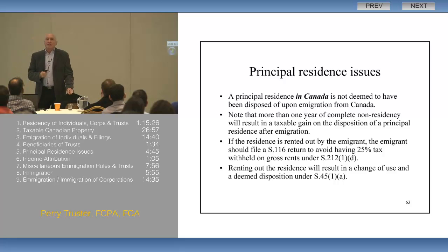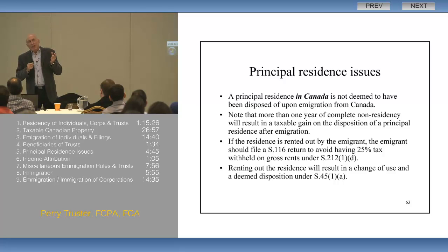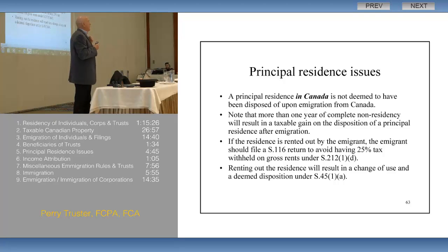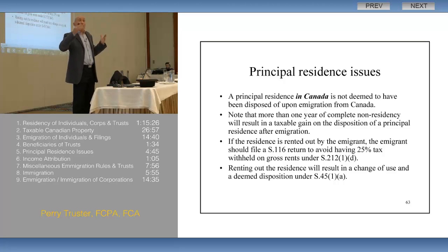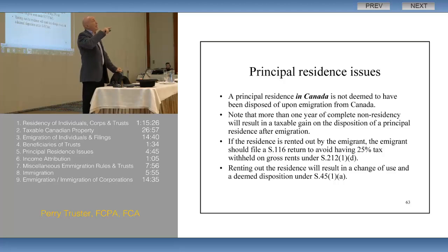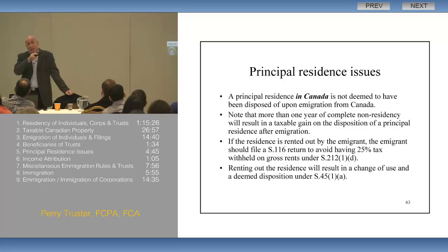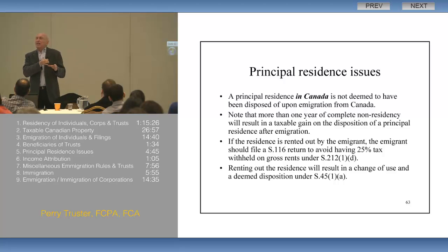Starting to rent the house out after you become a non-resident triggers a deemed disposition on a change of use. In Canada, many of us defer that by electing to treat the home as a principal residence for four years while renting it out, reducing the ultimate gain. But that doesn't do you any good as a non-resident, because you can't use those four years as principal residence years — even though Section 45 says you can — because the formula doesn't allow it. So you probably do not want to make that election.